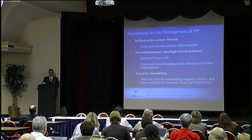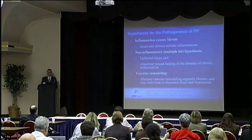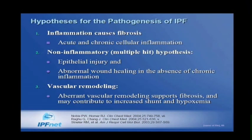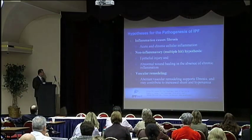As the name idiopathic implies, we don't know what causes IPF, but there are some hypotheses for pathogenesis, including inflammation causing fibrosis, acute and chronic cellular inflammation, a non-inflammatory multiple-hit hypothesis with epithelial injury and abnormal wound healing in the absence of chronic inflammation, and a vascular remodeling hypothesis stating that aberrant vascular remodeling supports fibrosis and can contribute to increased shunt and hypoxemia.